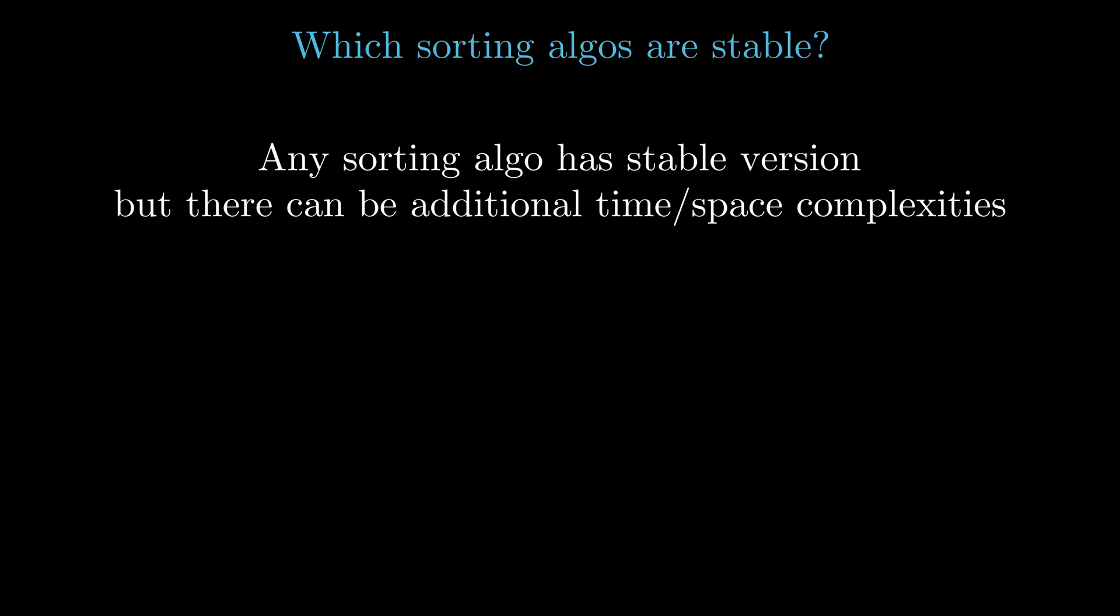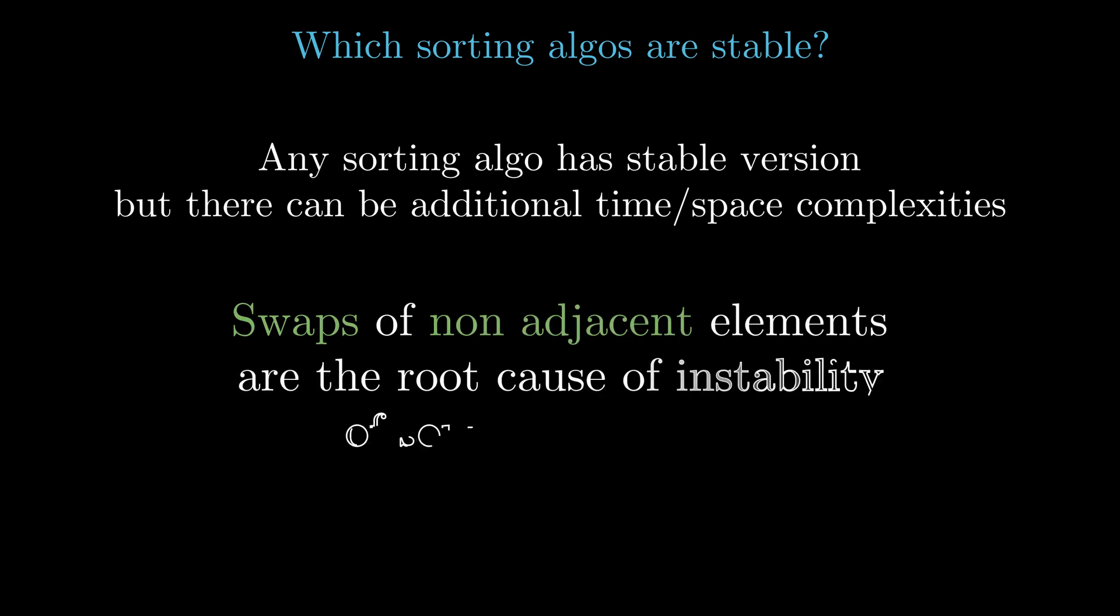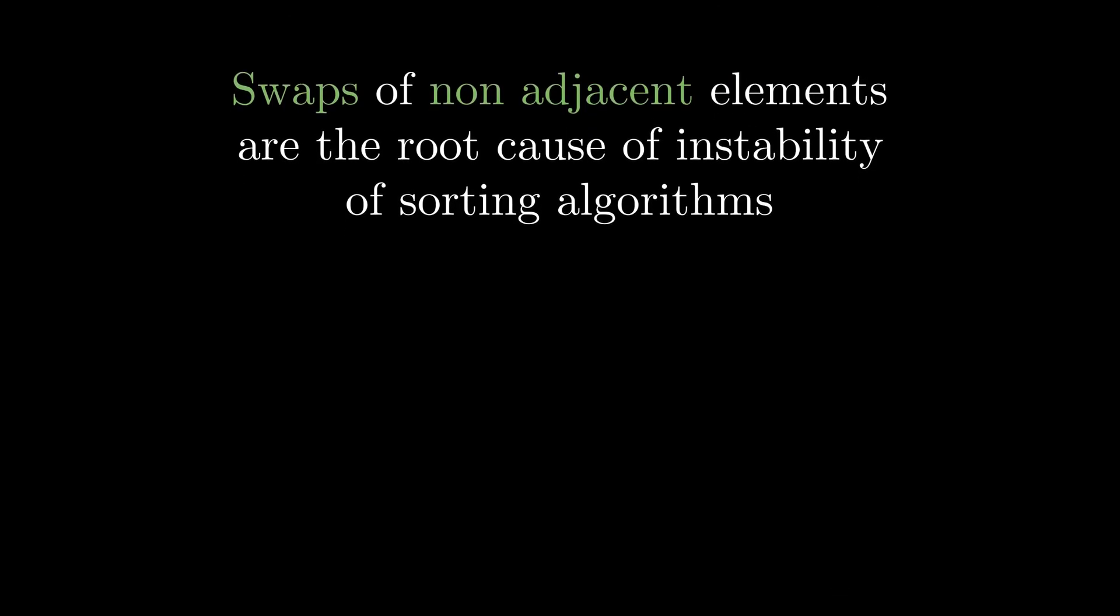If you closely observe the difference between various algorithms, you will find that the key characteristic of unstable algorithms is that they swap non-adjacent elements of the array. Let's see how the swaps of non-adjacent elements destroy the stability of an algorithm.